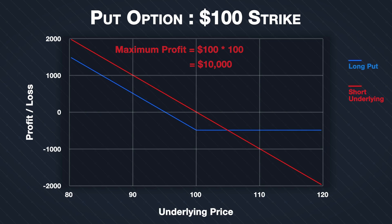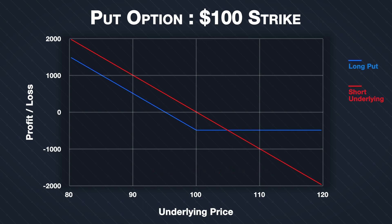Conversely, every dollar increase in the underlying price will give you a $100 loss, and this is not capped. This means your potential losses when shorting are unlimited. Let's compare this to the put option in blue.